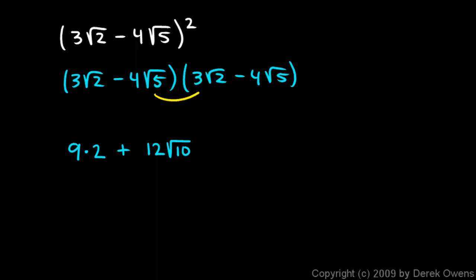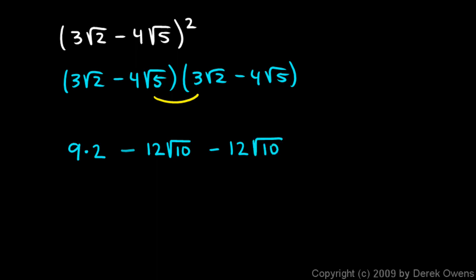Before I do the inner two terms — I have a mistake here. When multiplying my outer two terms, this is 3 root 2 times negative 4 square root of 5, so that should be a negative sign. So that's minus 12 root 10. Then the inner two terms: negative 4 square root of 5 times 3 root 2 gives me another negative — minus 12 root 10. And the last two terms: a negative times a negative gives a positive. 4 times 4 is 16, and square root of 5 times square root of 5 is 5.